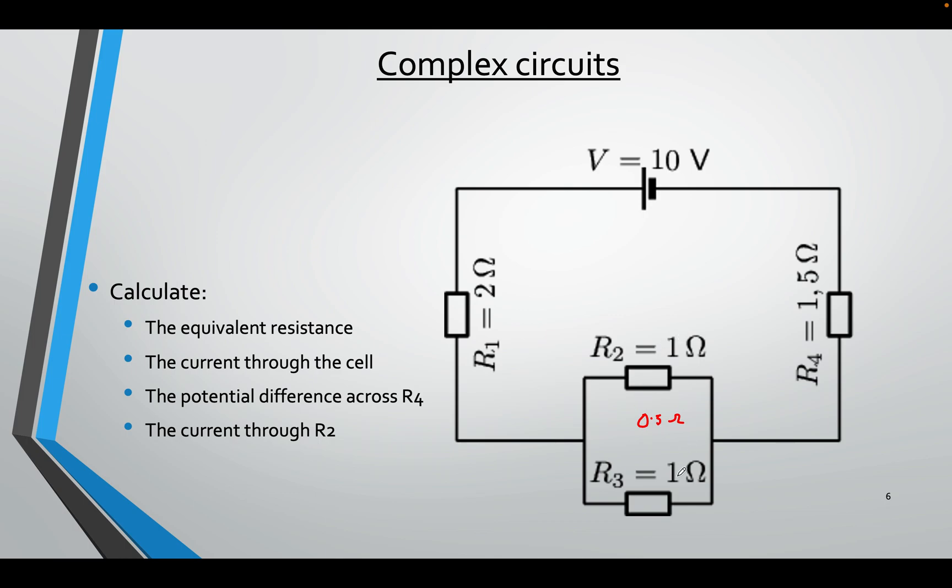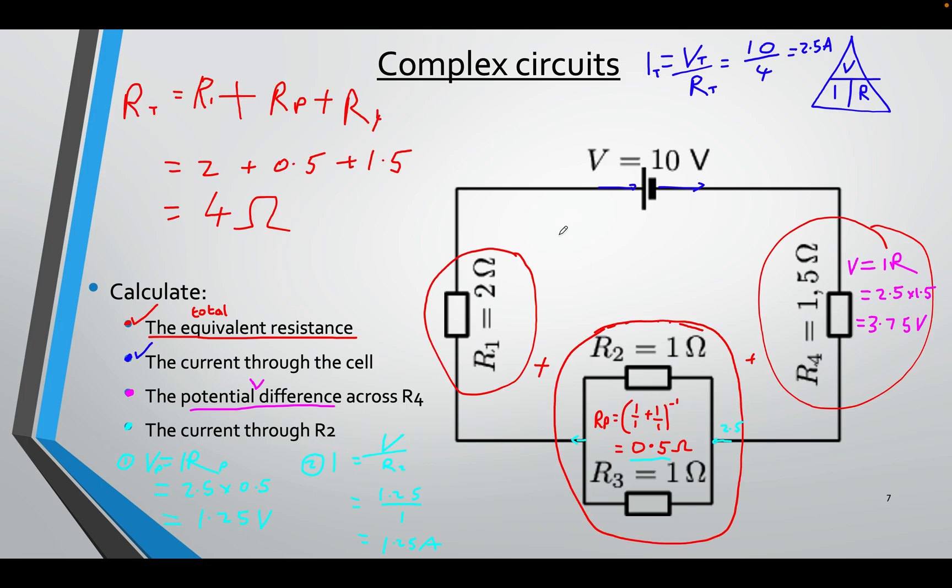If this was 10 and 10, the total will be 5. 20, 20, total will be 10. So that's a little trick to speed things up. So to find the total resistance, we add this one plus this one plus this one. R1 plus Rp plus R4, 2 plus 0.5 plus 1.5, and that gives me 4 ohms. We are done with the total resistance.